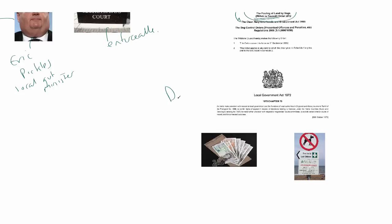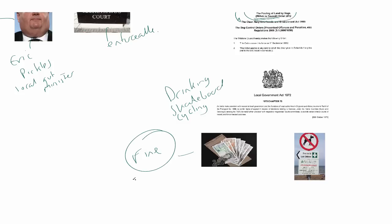Most bylaws will be made under the authority of the Local Government Act. There are lots of sections in that Act which specify what local councils can do and what bylaws they can make. Good examples include drinking, skateboarding, and cycling. Most of these are punishable with a fine — if you breach a bylaw you'll probably end up in the magistrates' court and, if found guilty, receive a fine.